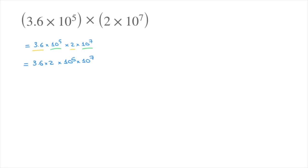Now let's start by multiplying 3.6 and 2. Now 3.6 times 2 is equal to 7.2. And we're still left with 10 to the power of 5 times 10 to the power of 7.